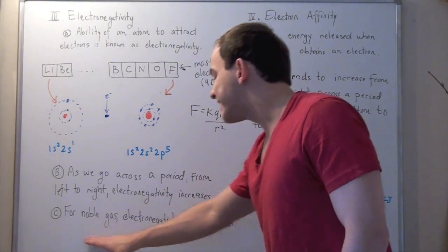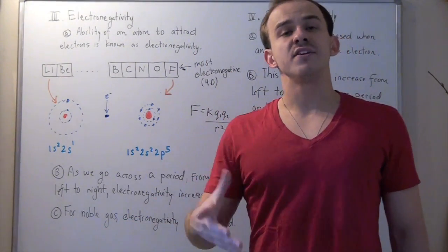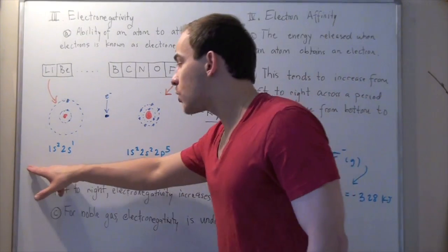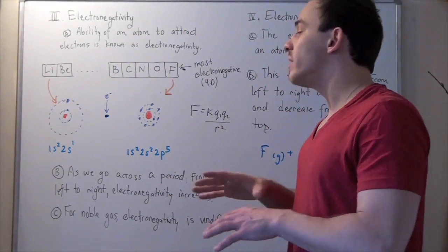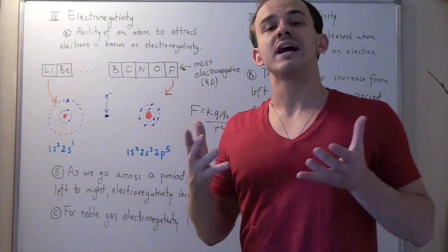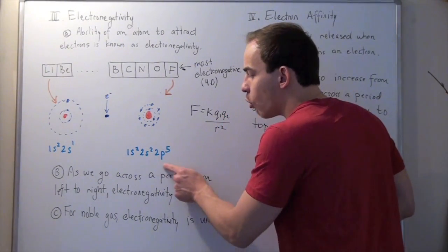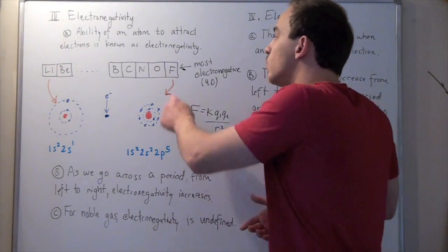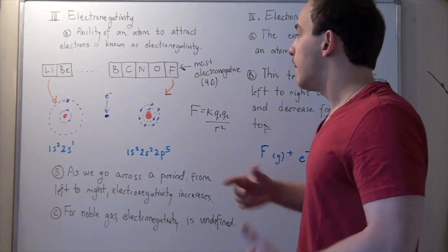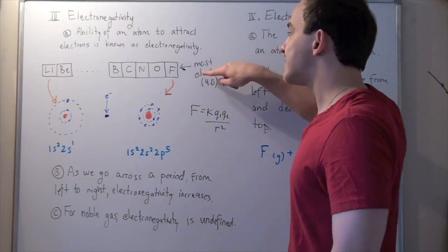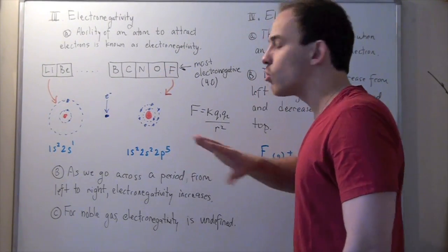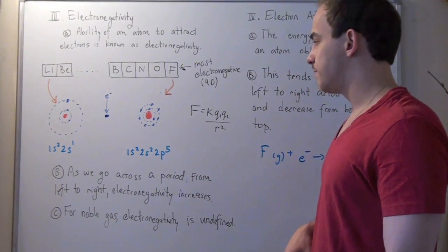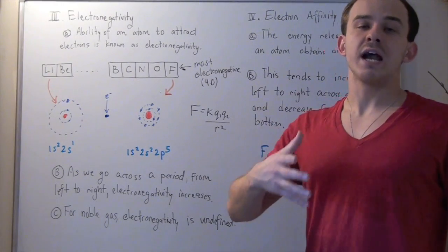For noble gases, electronegativity is undefined. That's because in noble gas electron configuration, the configuration is perfect — noble gases can't accept any more electrons. Notice that fluorine's 2p orbital can accept one more electron, which is exactly why fluorine can accept one. But the noble gas after fluorine has a 2p⁶ electron configuration and cannot accept any more electrons.